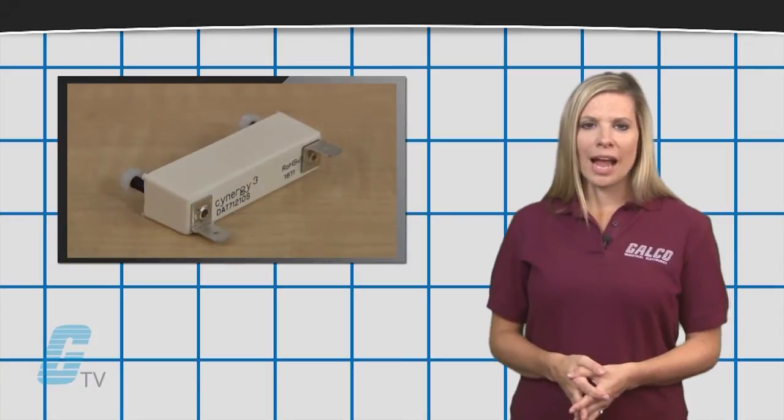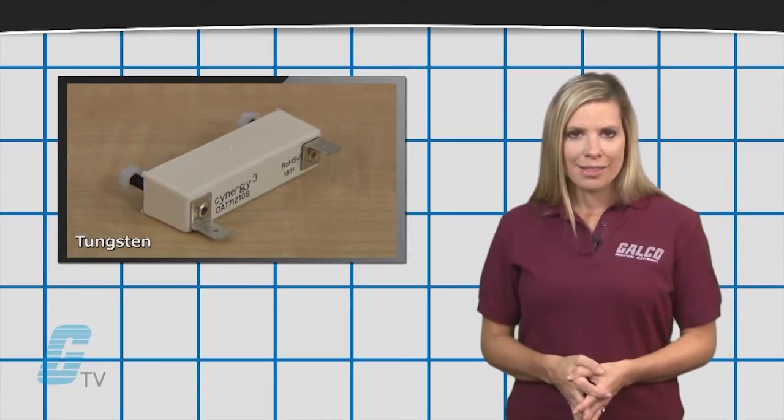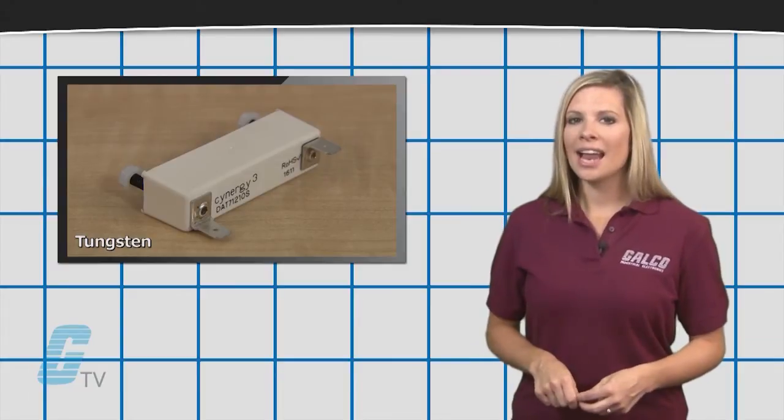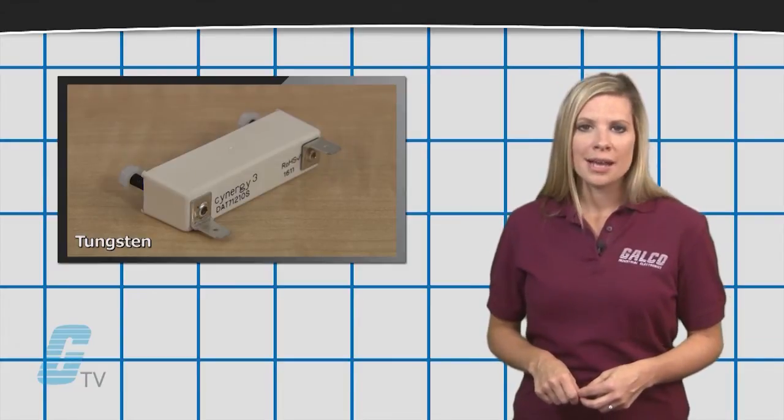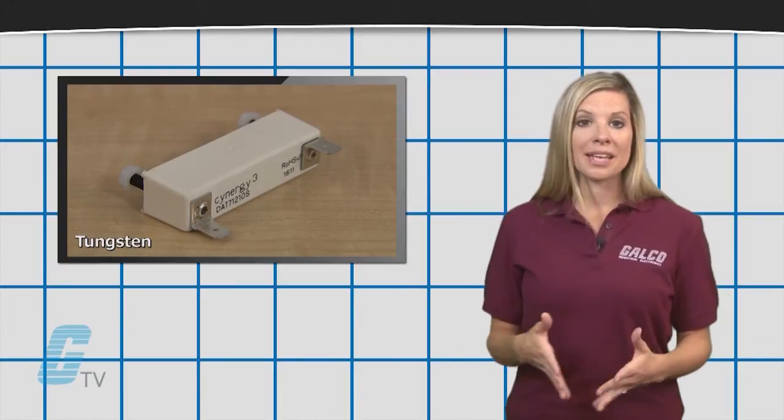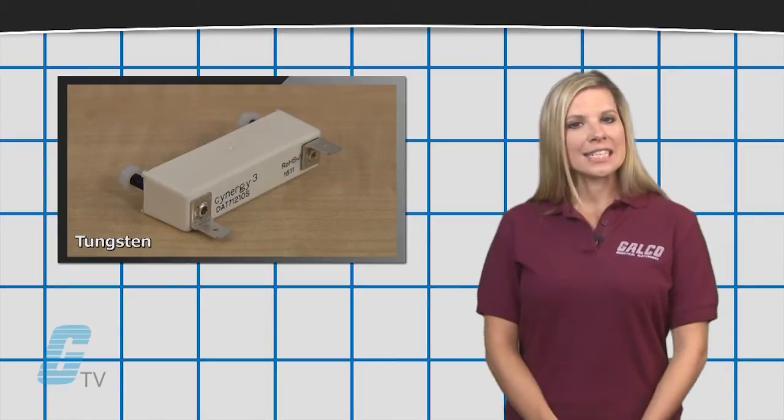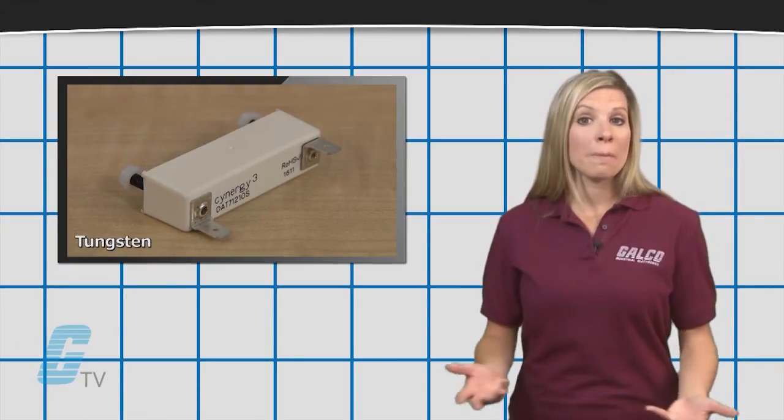Another low current option is tungsten. They have low electrical conductivity, meaning they cannot be used with higher currents, but have a high resistance to mechanical wear and are ideal for applications that require repetitive switching.